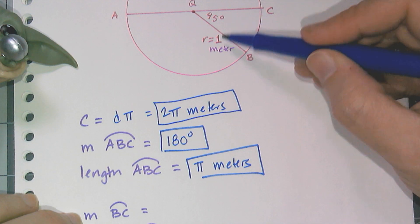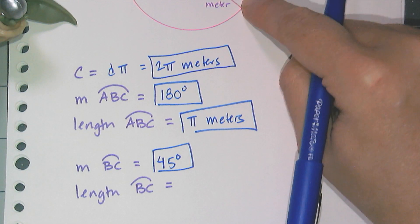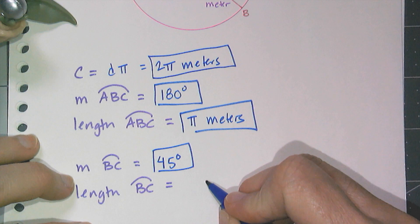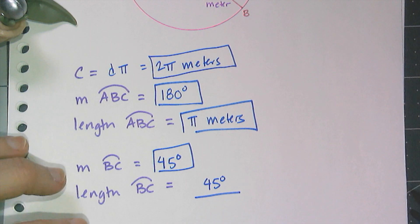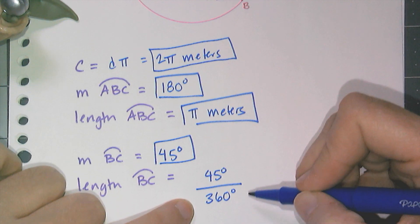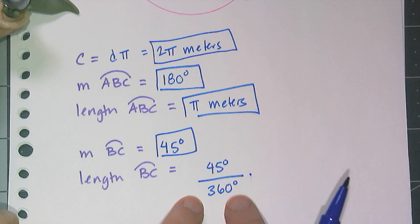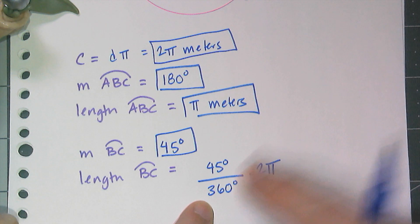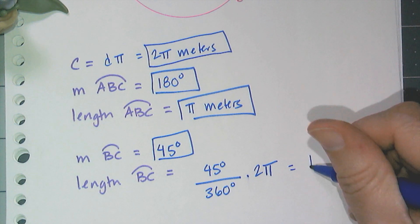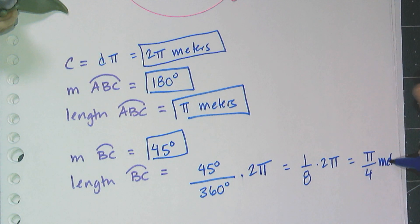Now let's look at arc BC. The measure of arc BC is 45 degrees. If I want to know the length of this arc or this piece of the circle, I have to know what fraction of a circle this is. I can simply take the measure, which is 45 degrees, and I have to figure out what part of the circle 45 degrees is. So I create the ratio 45 over 360, and then I multiply that—this is the fraction I need, this is the fraction of the circle that is arc BC. So if I multiply this by the circumference, 2π, I will get the length of that arc. So if I want to go ahead and do the calculations, 45 over 360 is the fraction one-eighth, so it's one-eighth of 2π, or π over 4 meters.